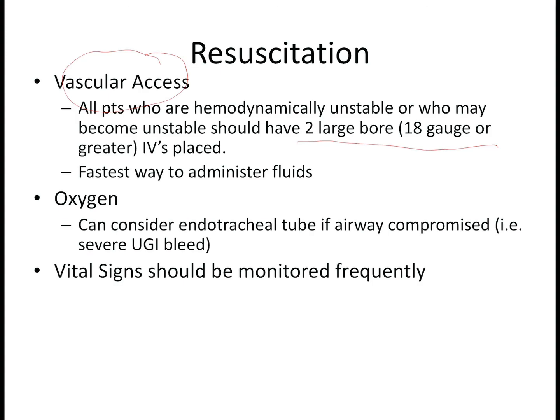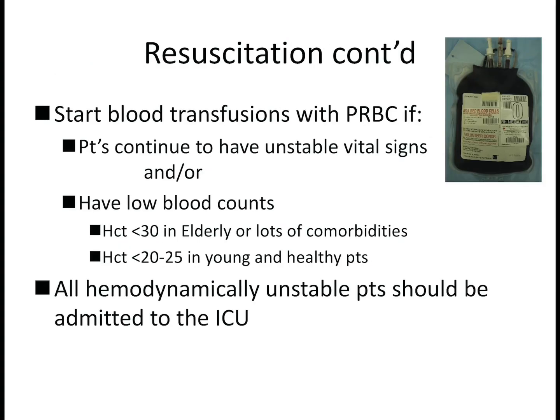You should also consider administering oxygen, and consider intubating patients if the airway is compromised due to very severe bleeding and aspiration risk. Vital signs should be monitored very frequently during resuscitation. Consider blood transfusions if patients continue to have unstable vital signs or low blood counts — a general rule is transfuse when hematocrit falls below 30 in elderly or high-comorbidity patients, and below 20–25 in young healthy patients. Admit all unstable patients to the ICU.